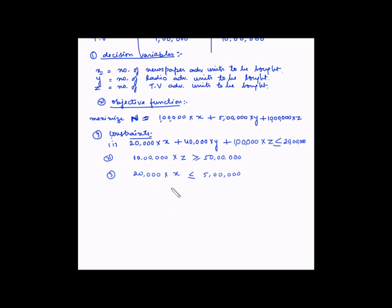This completes the formulation of the linear programming problem for the media selection example. One additional constraint required in every linear programming problem is the non-negativity constraint: x, y, and z must each be greater than or equal to 0.